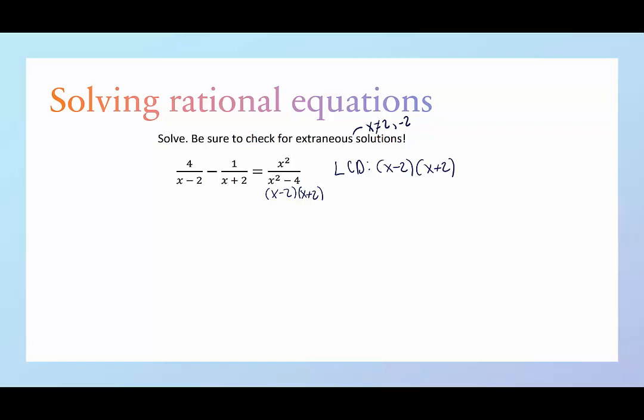Now I'm just going to rewrite each term to have both factors. So this one has the x minus 2, but it's missing the x plus 2. And whatever I do to the denominator, I have to do to the numerator as well to keep it what it was, right? It was given as 4 over x minus 2. I need to keep it that way by really just multiplying by 1.